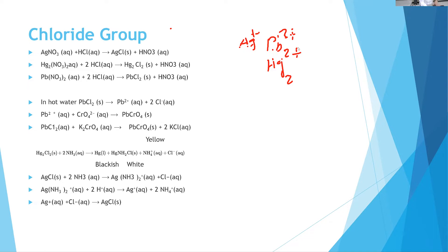Say you have a mixture containing silver, mercury, lead, copper, bismuth, calcium, magnesium, manganese, iron — everything in solution. When you add HCl, only the chlorides of silver, mercury, and lead will precipitate. Everything else stays in solution.